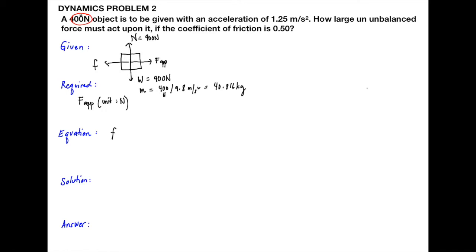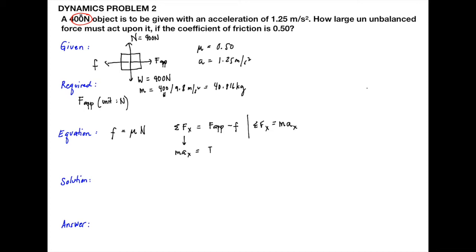We also have the frictional force. Since it is a 400 Newton object, the weight is given as 400 Newton. The mass is 400 divided by 9.8 meter per second squared, which equals 40.816 kilograms. Since the object moves horizontally, the normal force equals 400 Newton — equal to the weight.